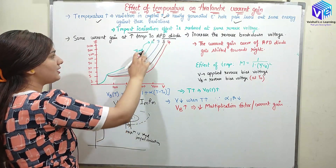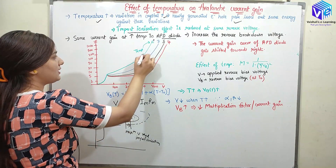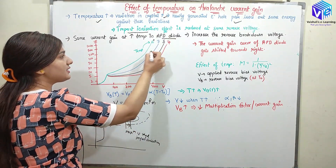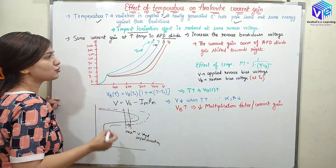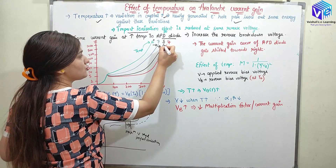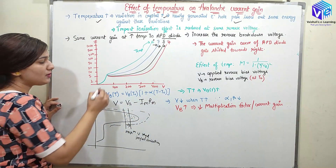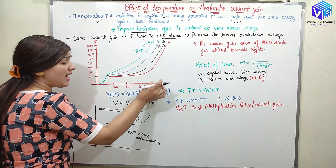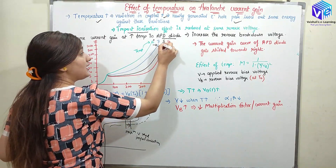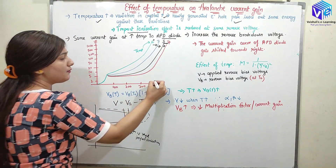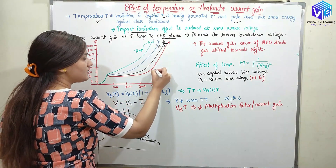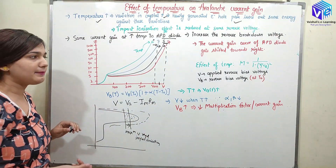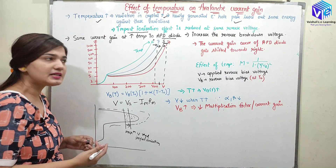At 0 degrees, we get this type of current gain curve. Now if I increase the temperature, it is going to shift to the right. As I keep increasing the temperature, it keeps shifting. You can see we are increasing the reverse biased breakdown voltage. A higher voltage is required to get the same current. Here we require more voltage for generation of the same current, so VB has increased.